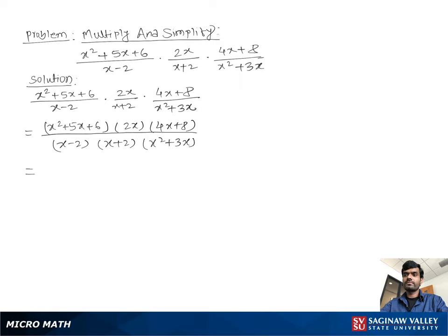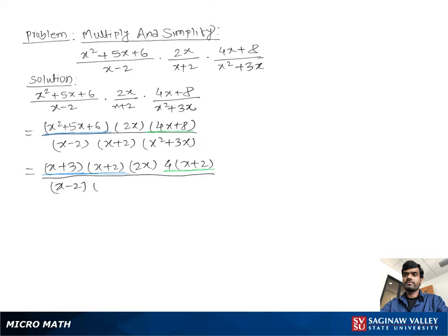The factor of x² + 5x + 6 is (x + 3)(x + 2). Times 2x, then we take out 4 as a common factor: 4(x + 2), over (x - 2) times (x + 2). Then we take out x as a common factor: x(x + 3).